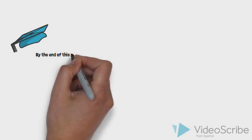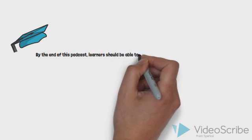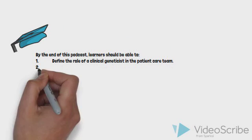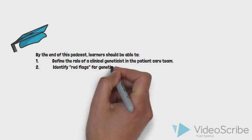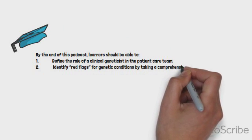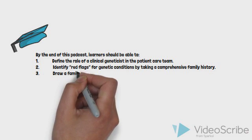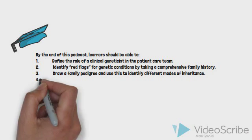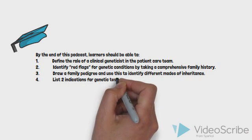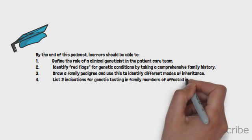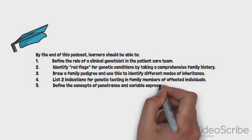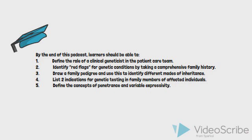By the end of this podcast, learners should be able to: 1. Define the role of a clinical geneticist in the patient care team. 2. Identify red flags for genetic conditions by taking a comprehensive family history. 3. Draw a family pedigree and use this to identify different modes of inheritance. 4. List two indications for genetic testing in family members of affected individuals. 5. Define the concepts of penetrance and variable expressivity.